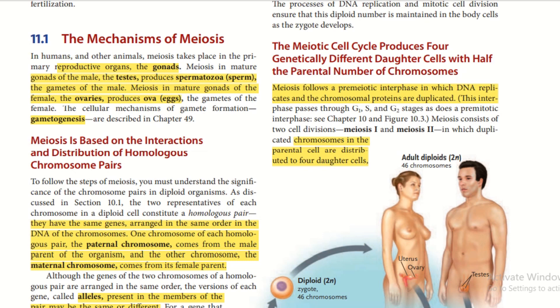In males, we have testes which produce sperm, and in females, we have ovaries which produce ova or eggs. This process of production of gametes is known as gametogenesis.